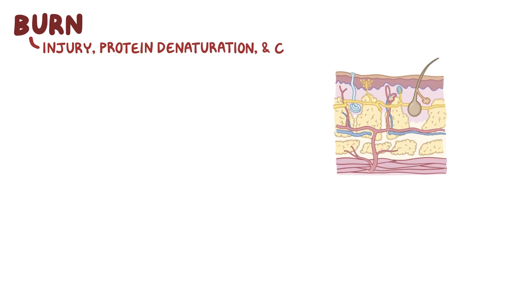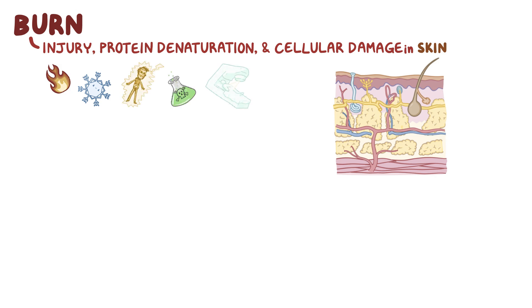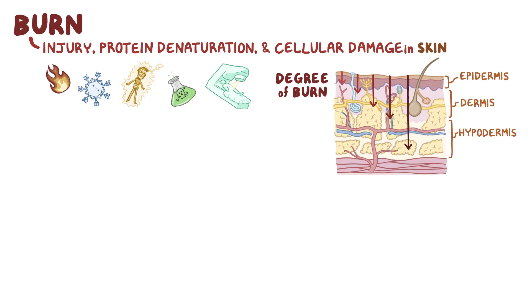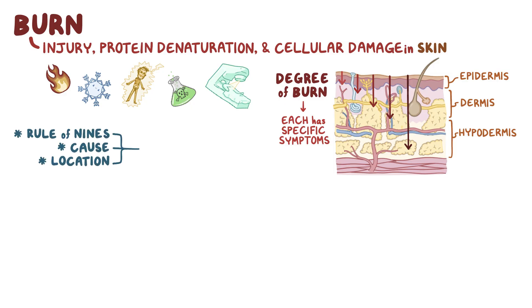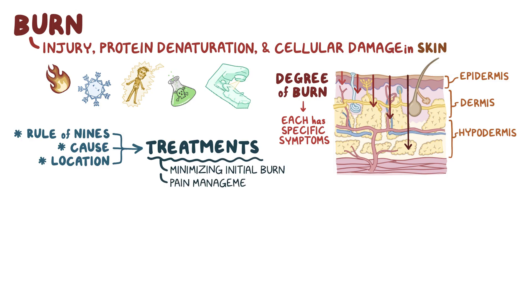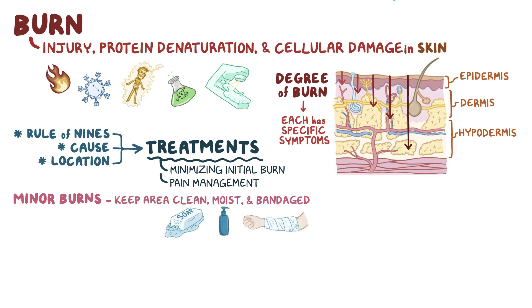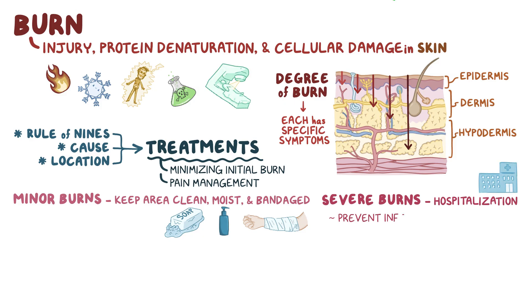To recap, a burn is injury, protein denaturation, and cellular damage that occurs in the skin caused by extreme heat or cold, electricity, some chemicals, or radiation. The degree of burn is determined by whether the epidermis, dermis, or hypodermis are affected, and each degree has specific symptoms. The rule of nines, the cause of the burn, and location of the burn can help determine treatments. In general, treatments include minimizing the initial burn and pain management. Minor burns don't typically require treatment beyond keeping the area clean, moist, and bandaged. But severe burns may require more extensive medical intervention, particularly hospitalization at specialized burn centers to prevent infections and dehydration.